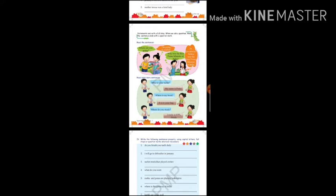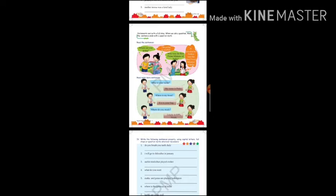Read the sentences: the boy is asking 'Where are you going?' and the girl replies 'I'm going to market.' Then: 'Who was the first Prime Minister of India?' The girl replies 'Pandit Jawaharlal Nehru was the first Prime Minister of India.' The boy is asking a question so it ends with a question mark, and the girl is replying in a simple statement so it ends with a full stop.